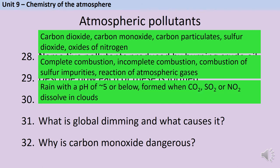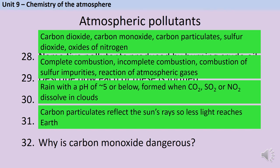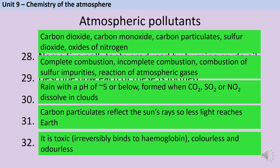Acid rain is rain that has a pH of about 5 or below, and it's formed when carbon dioxide, sulphur dioxide, or nitrogen dioxide dissolve in the water that makes up clouds. Global dimming is a phenomenon caused by carbon particulates, where soot in the air reflects back radiation, meaning that literally less of the sun's rays are able to reach Earth and we're getting less light. Carbon monoxide is dangerous because it's toxic — it irreversibly binds to the haemoglobin in your red blood cells — and it's colourless and odourless, so really hard to detect.